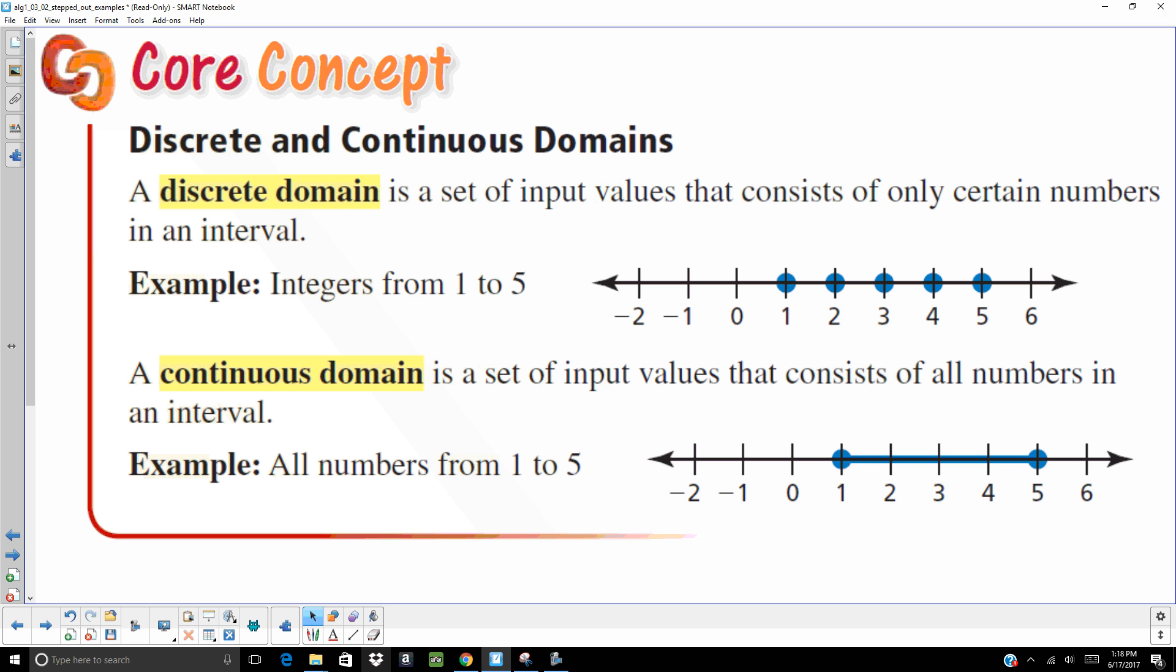All right. Discrete and continuous domains. They're giving you a fancy word here for discrete or continuous domains. Don't worry about the vocabulary on this one. It's pretty easy to memorize. Discrete, it's going to be in sections. It's going to be in intervals. Continuous sounds exactly like it is. There's no stopping points. It's continuous.